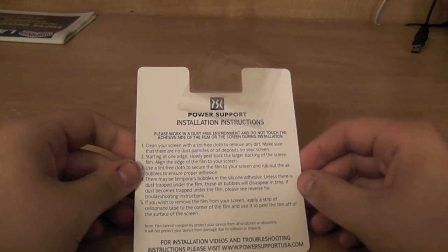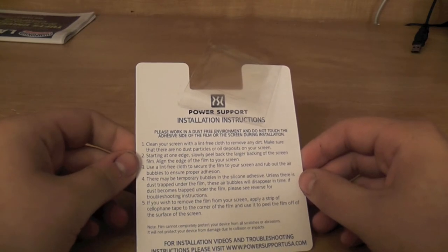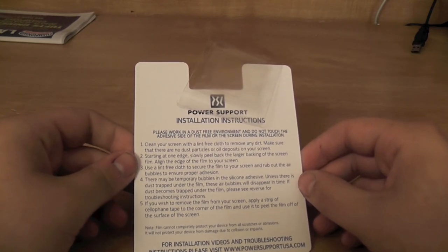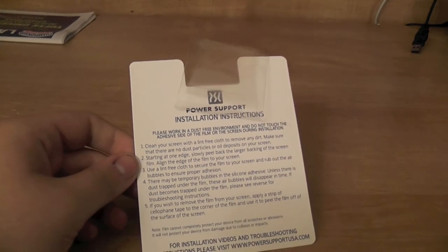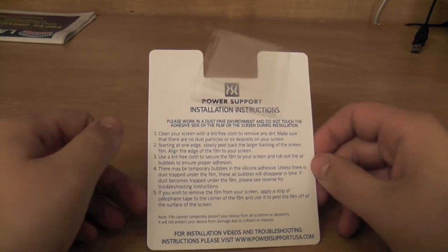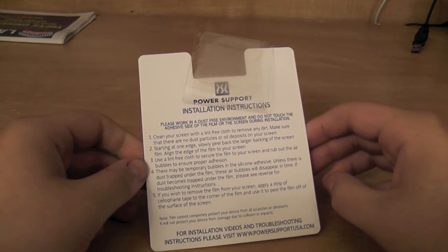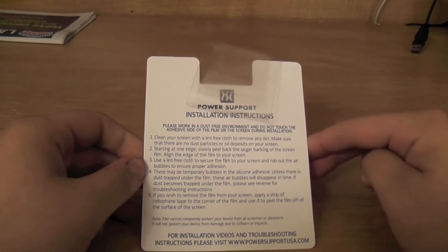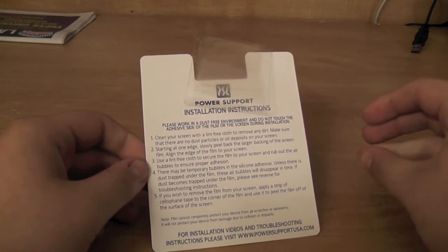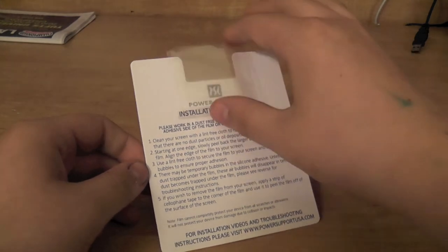Then it says peel back the larger screen off the screen film, align the edge and fit to your screen. Use a lint free cloth which I have right here to secure it to the device. And then there may be some bubbles but unless there's dust trapped in the film the air bubbles will disappear over time. And if you want to remove the screen for any reason just put a piece of tape on it and it'll come right off.